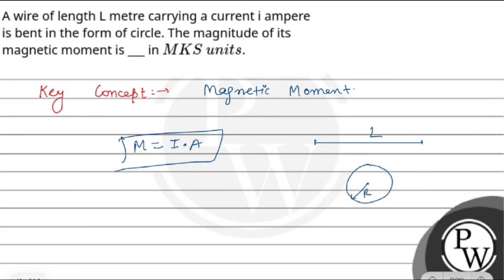The circumference equals L, so we can write 2πr = L. From this, we can write r = L/(2π). Now we can find the area.